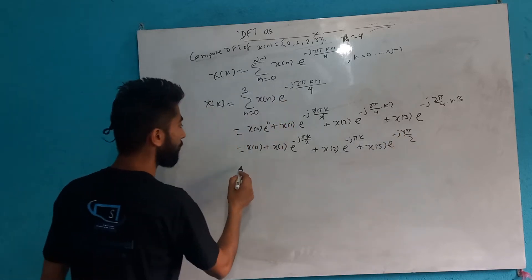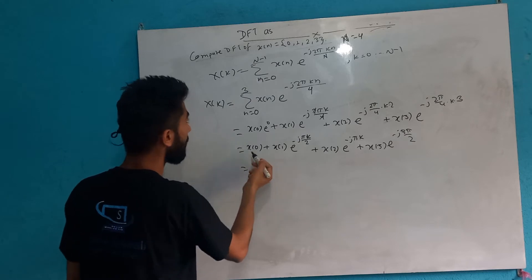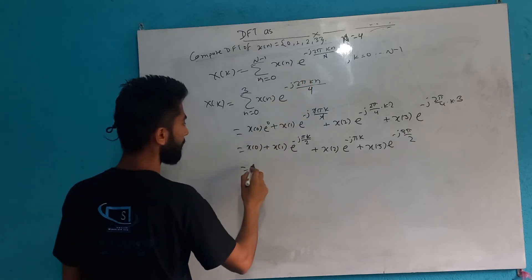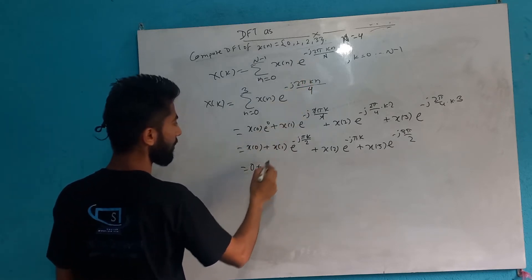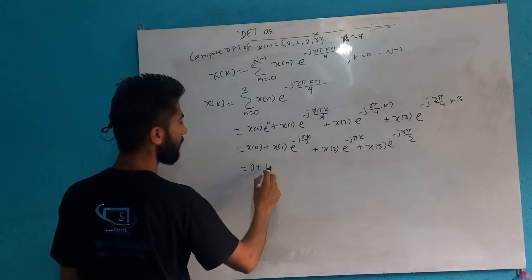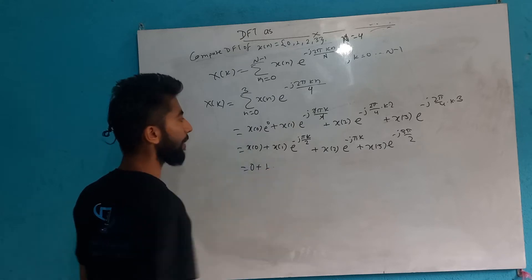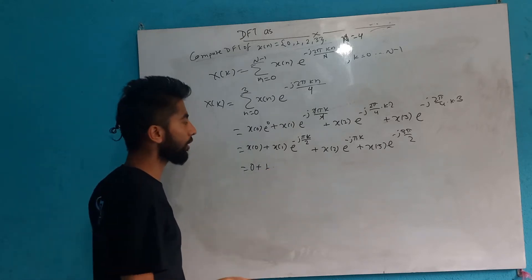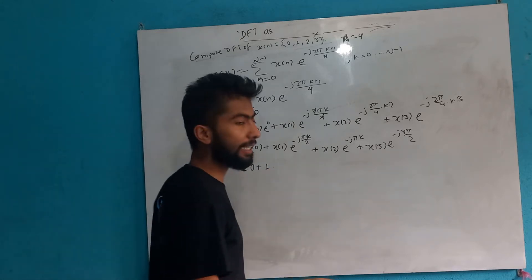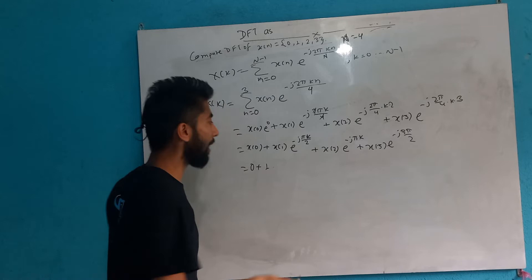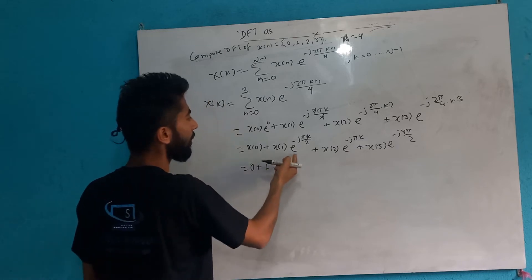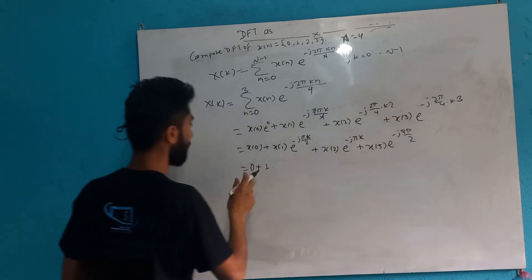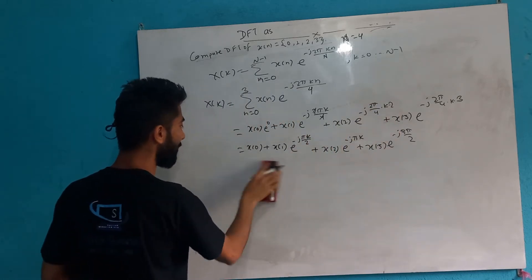Now let's compute the value. For k=0: x[0] plus x[1] into e to the power minus j pi by 2. Let's solve this — this is the first equation.